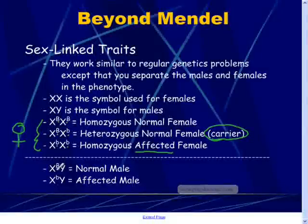The normal male, X capital B Y. Notice Y doesn't have a letter here. Capital B means normal male. Lowercase b here means affected male. There is not a heterozygous because there's not a corresponding letter on the Y chromosome.